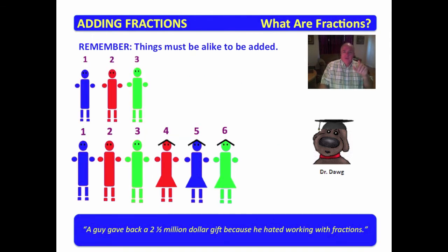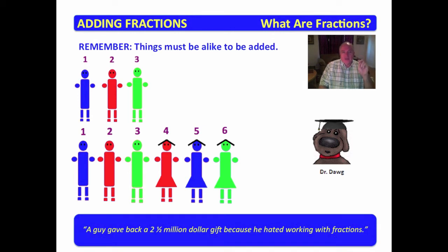Remember that things must be alike to be added. How much is an armadillo plus an apple? Well, it's an armadillo and an apple. How much is an armadillo plus an armadillo? Two armadillos. How much is an apple plus an apple? Two apples. When you looked at these pictures and you began to count, you inherently knew that they had to be alike, so you made them alike.